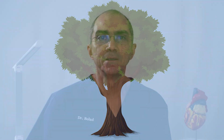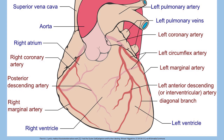The circumflex coronary is the other large branch of the left main coronary artery. It courses to the left in the left atrioventricular groove. Its distribution is quite variable; it provides branches to the lateral parts of the left ventricle called obtuse marginal branches. In 10 percent of patients, the circumflex artery is a large artery that, in addition to supplying the lateral wall, continues and also supplies the inferior wall of the left ventricle.